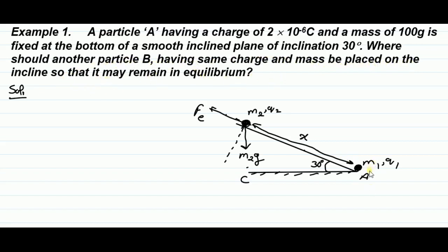Suppose M1 is the mass and Q1 is the charge of particle A, and M2 is the mass and Q2 is the charge of particle B. The separation between these two particles is X, and Fe is the electrostatic repulsion between these two charges. Now M2G is the gravitational force acting in the downward direction.